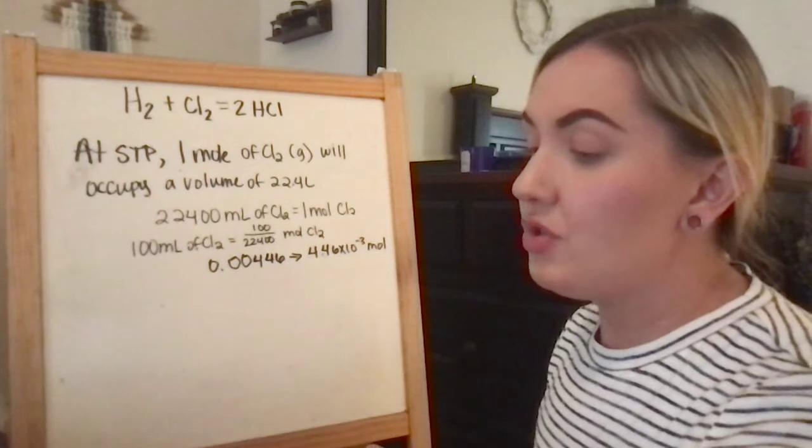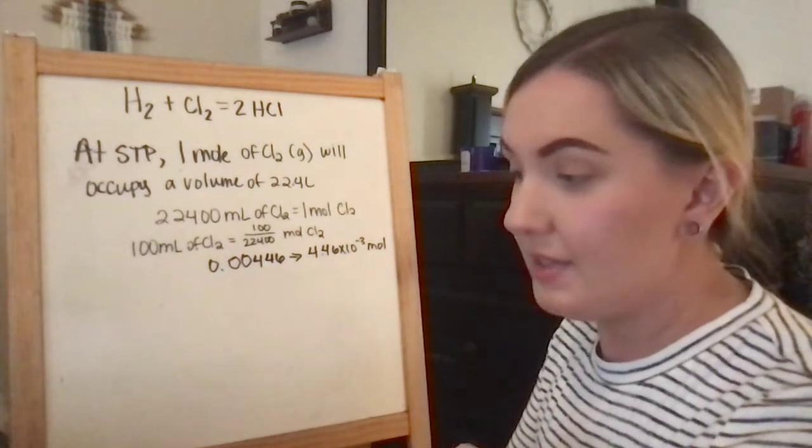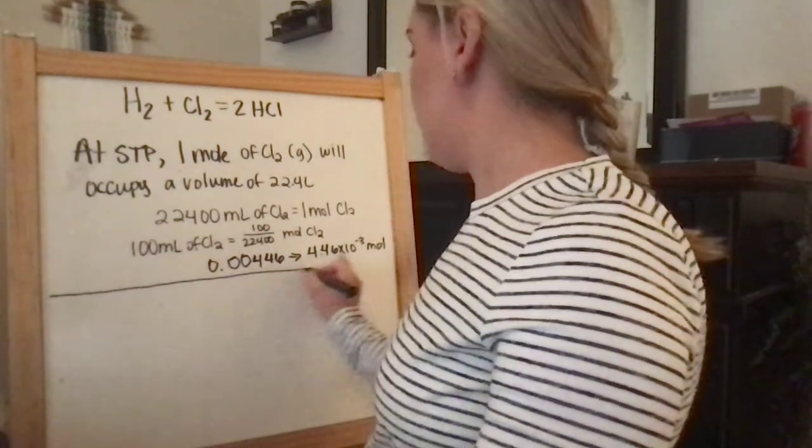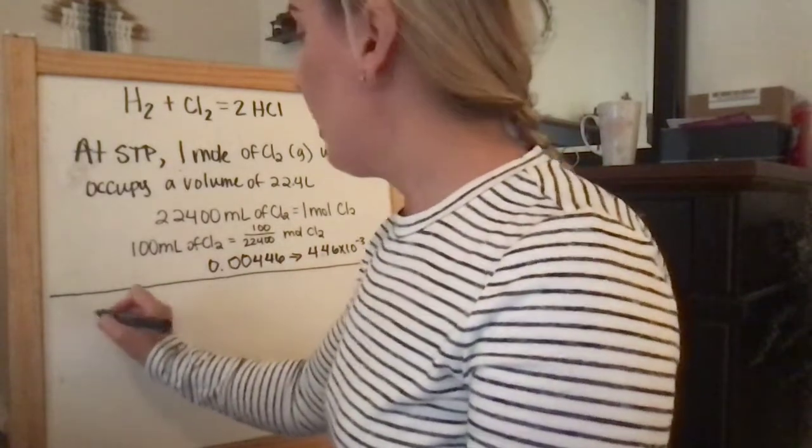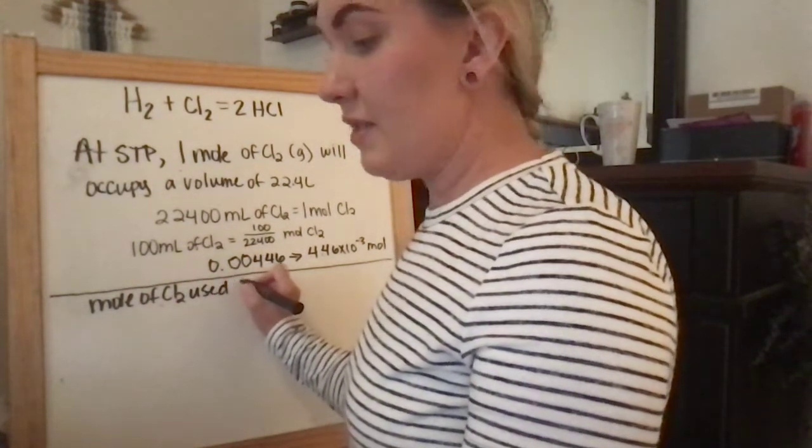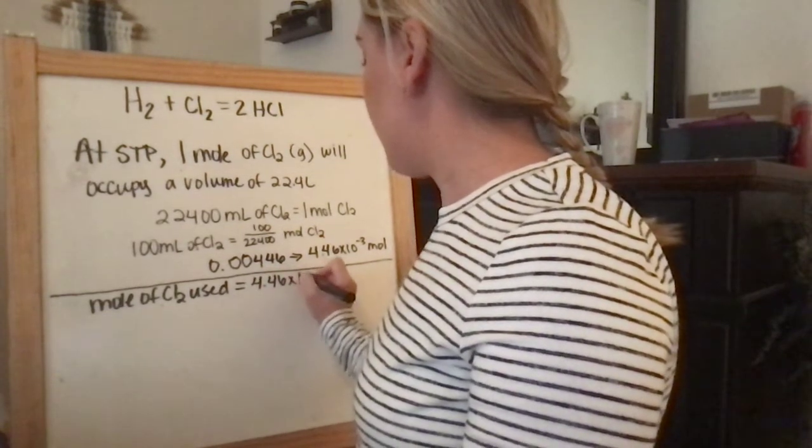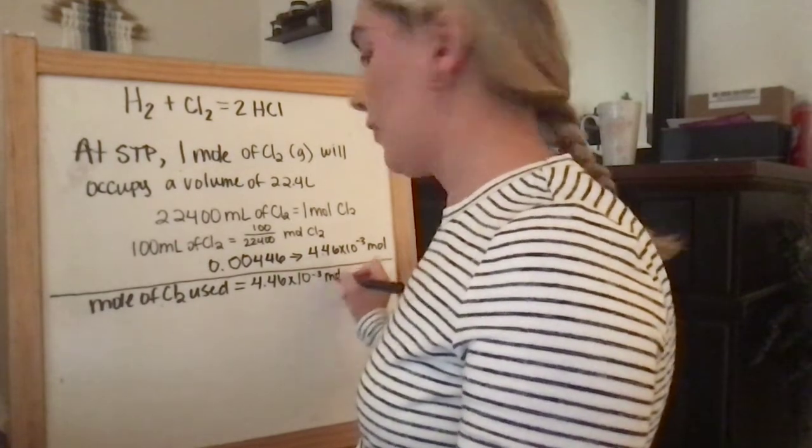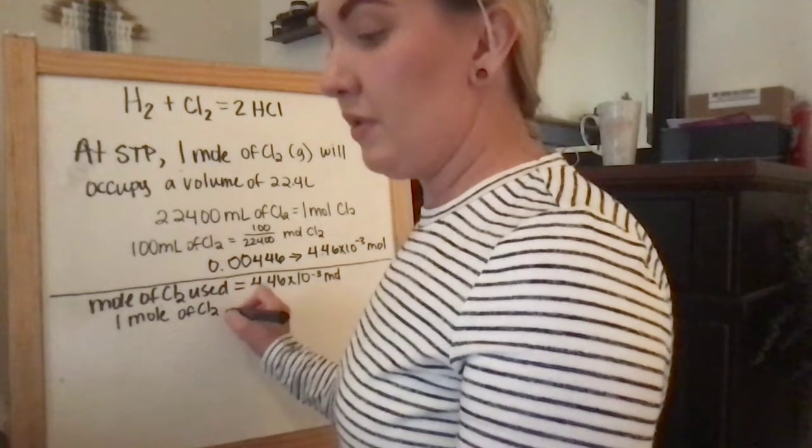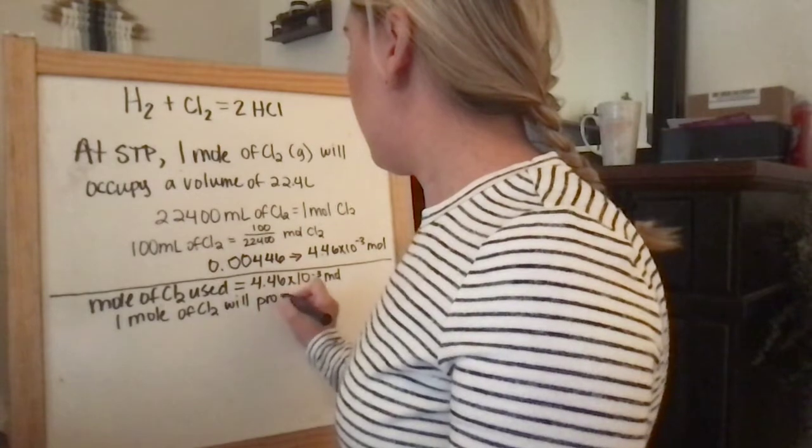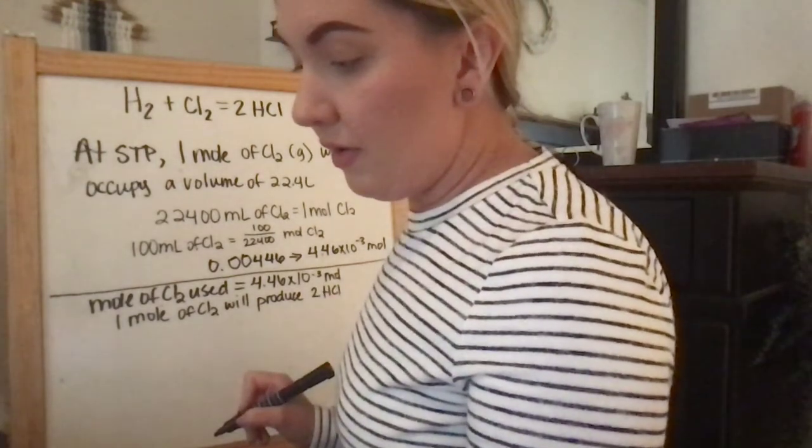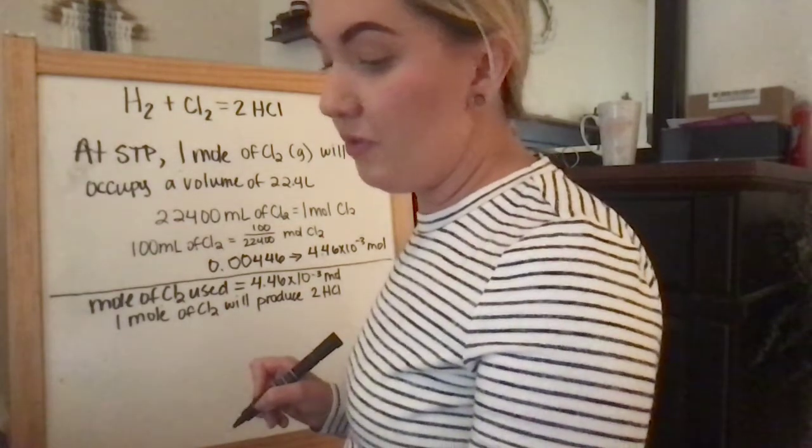Our next step is to figure out how much of hydrochloric acid is being produced. So we're going to do a mole ratio. This is step 2. The mole of Cl2 used is 4.46 times 10 to the negative 3rd.